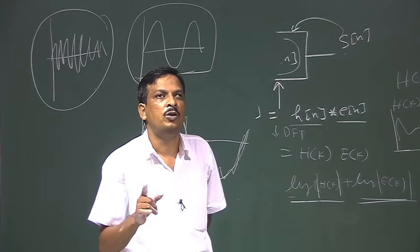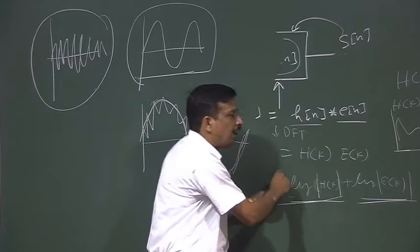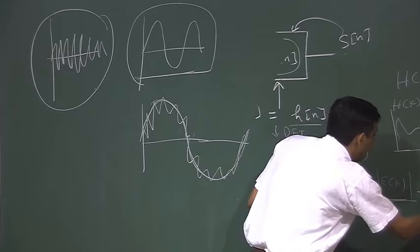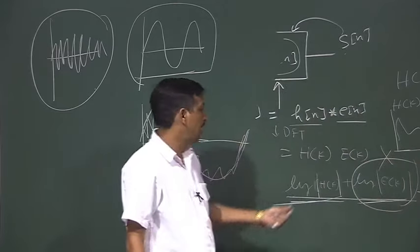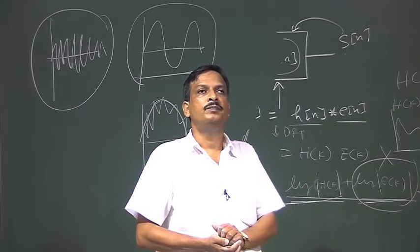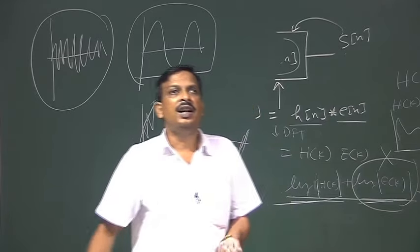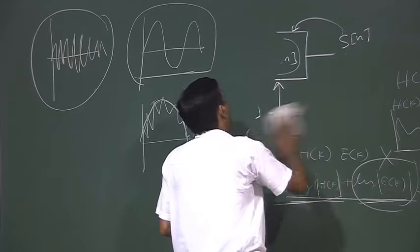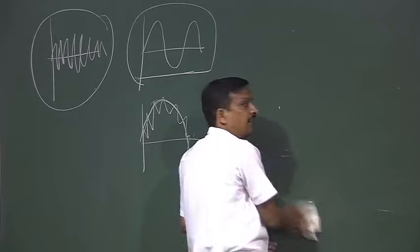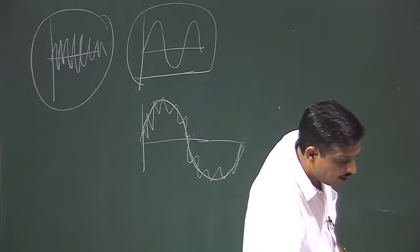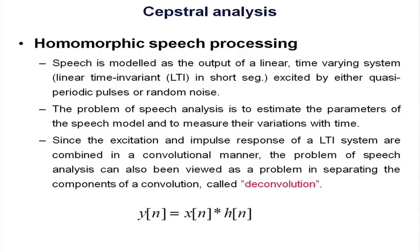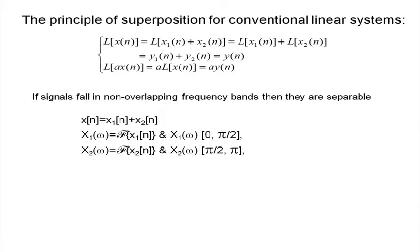This kind of signal processing has a special name — it is called homomorphic signal processing. This type of signal processing is used when we want a methodology by which we can deconvolve a convolved signal. This type of signal processing is represented as homomorphic signal processing.